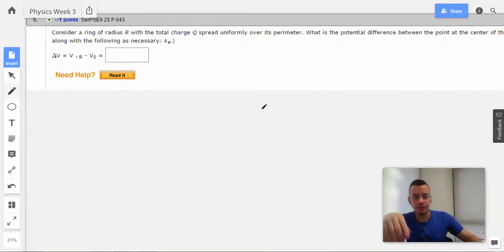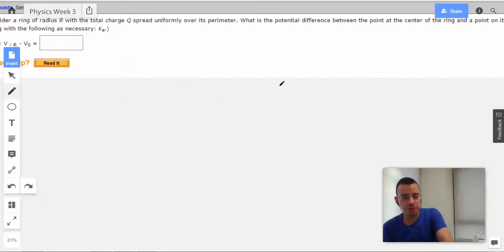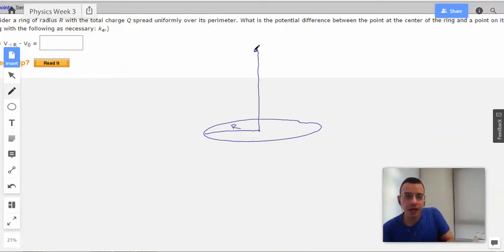Okay, so we'll start by drawing a picture. This picture is going to be a circle, or specifically a ring, with a radius of R, and then this will be 15R.